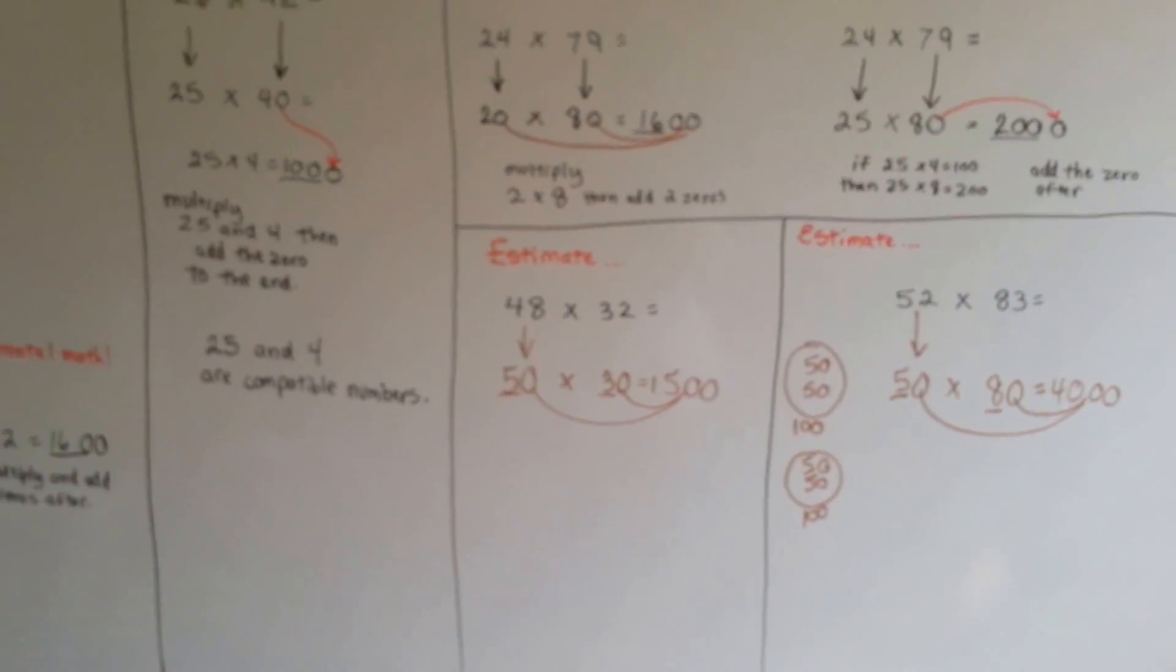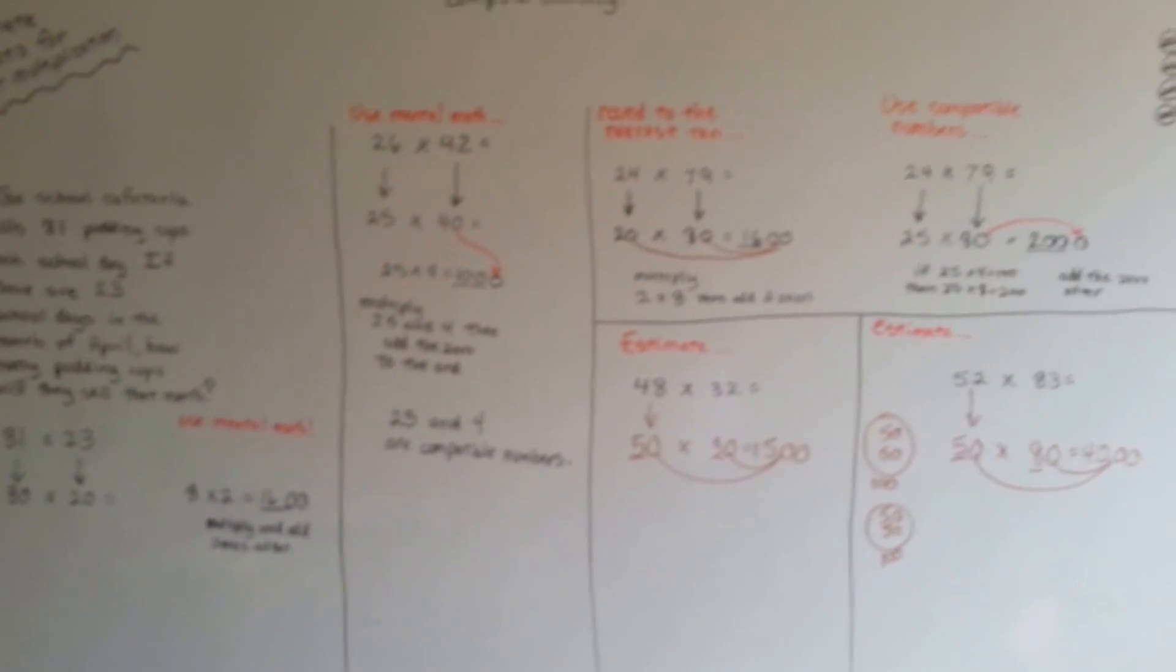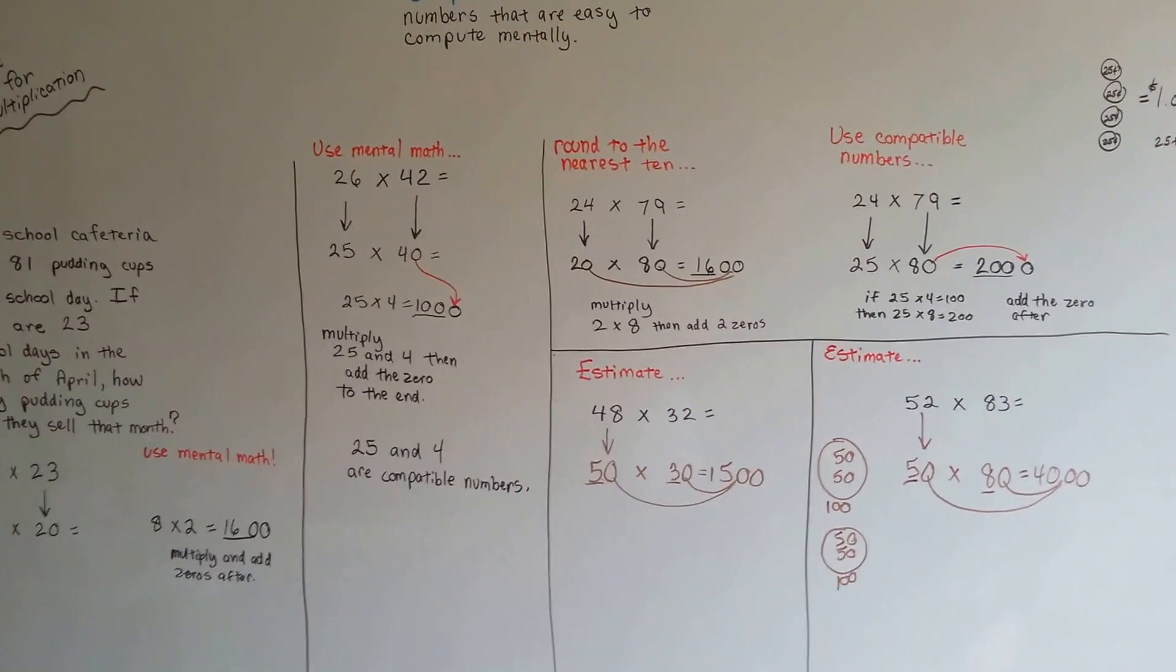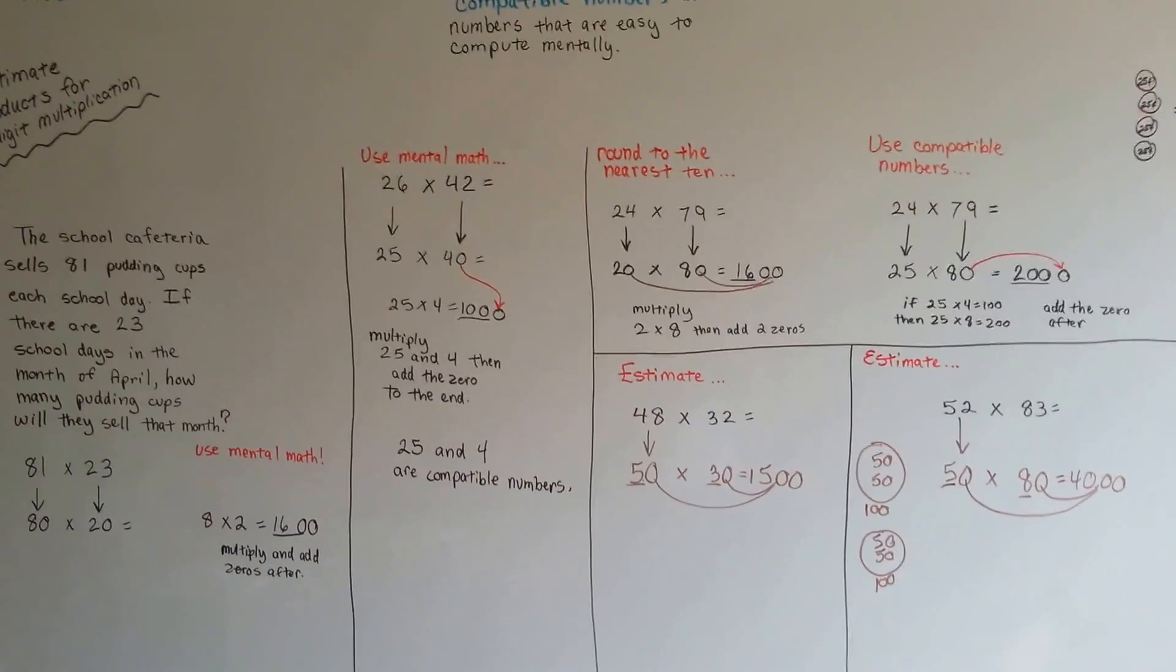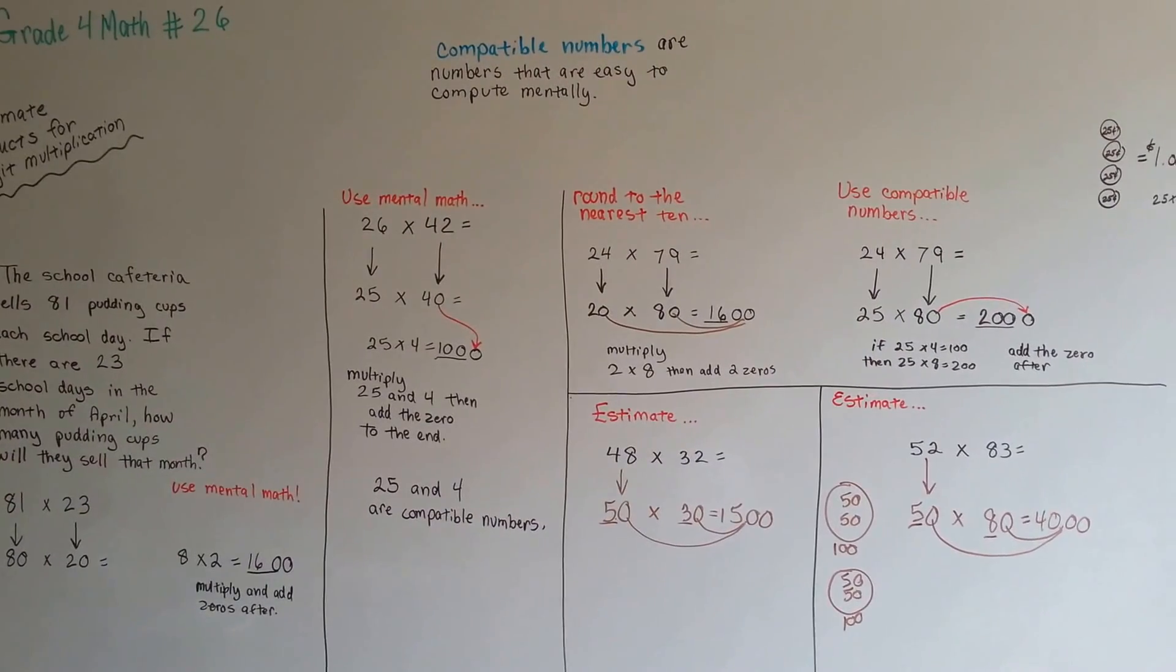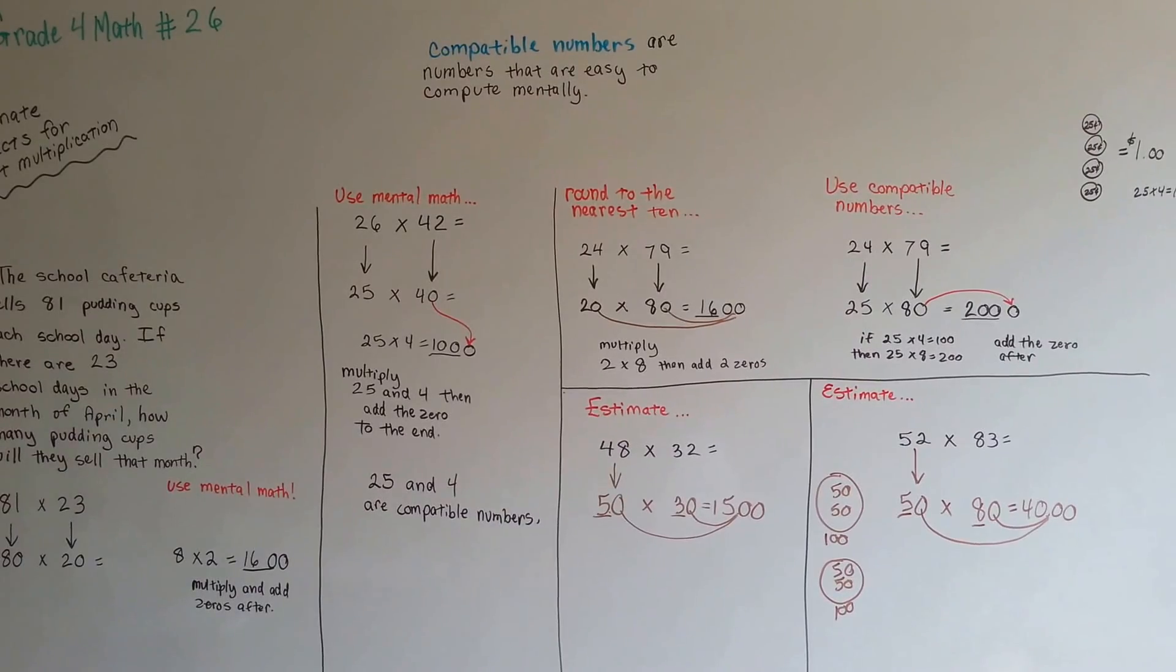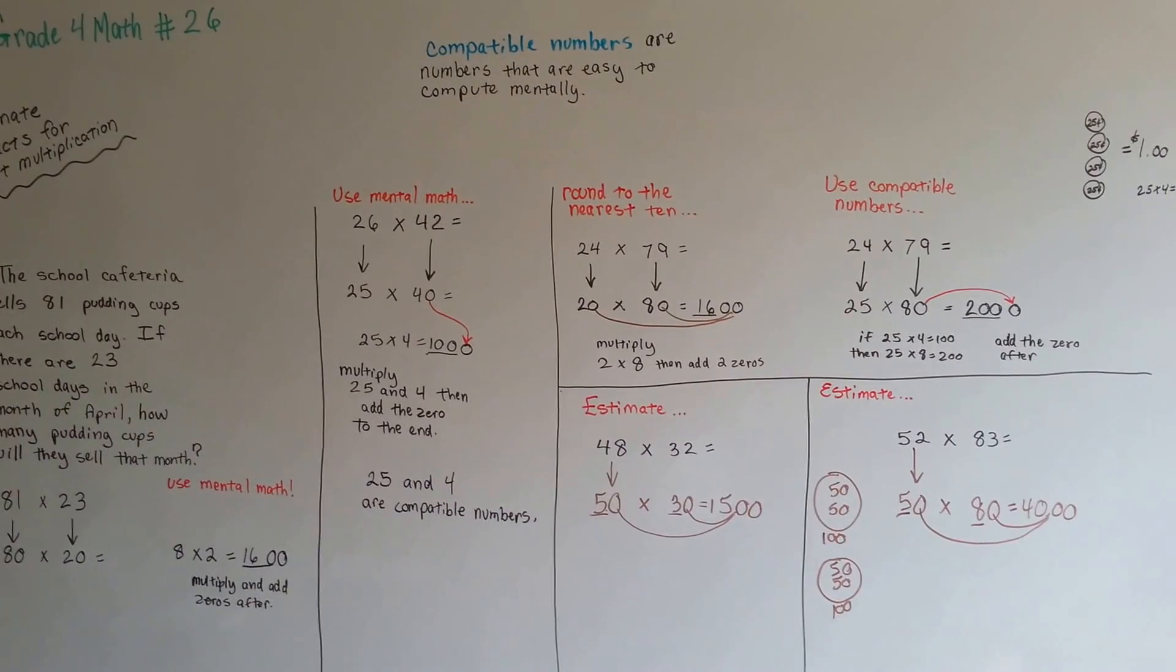You can use compatible numbers. You could do mental math and add the zeros on the end. Sorry about my focus there. That happens a lot when I wave my hand in front of the camera. It focuses on my hand. So, now you know how to estimate products for two-digit multiplication by rounding, by moving the zeros. I'll see you next video. Bye.